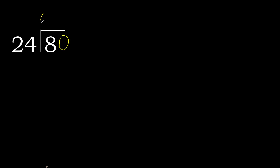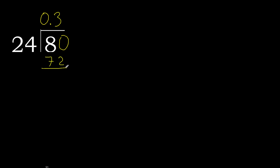8 divided by 24. 8 is less, therefore complete — always complete with 0 here: 0 point. 80 is not less, therefore with 80: 24 multiplied by which number is nearest to 80 but not greater? 24 multiplied by 4 is greater. 24 multiplied by 3 — 72 — is not greater, subtract.